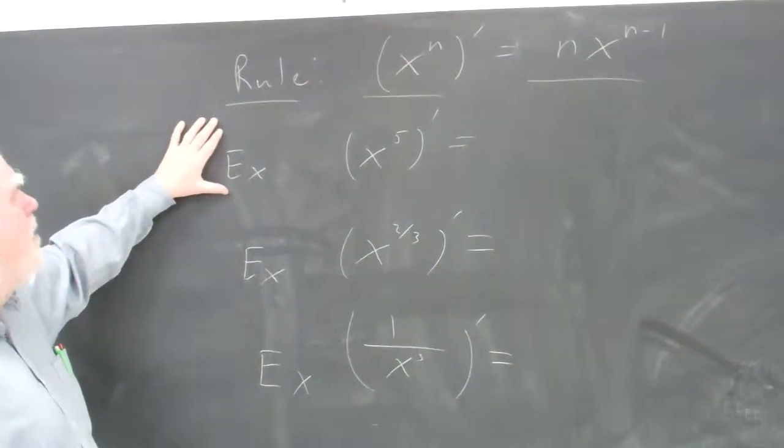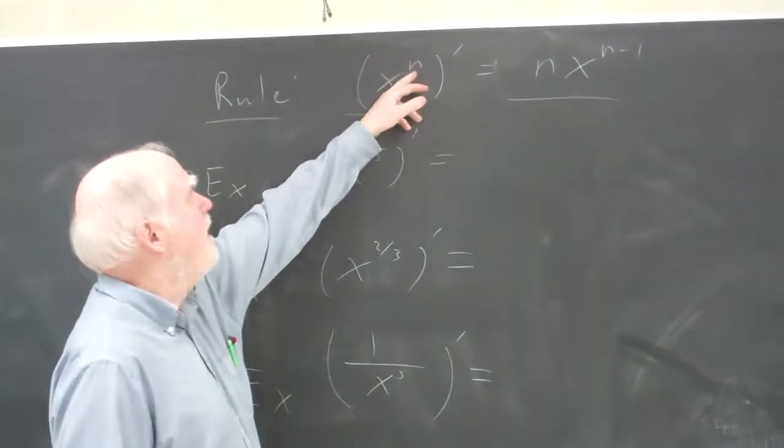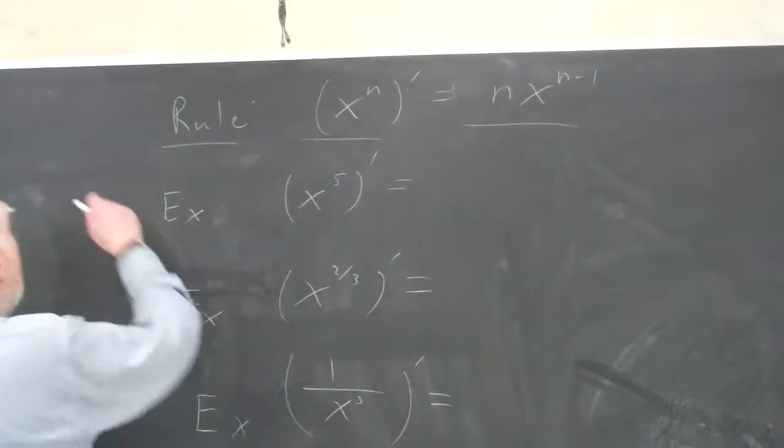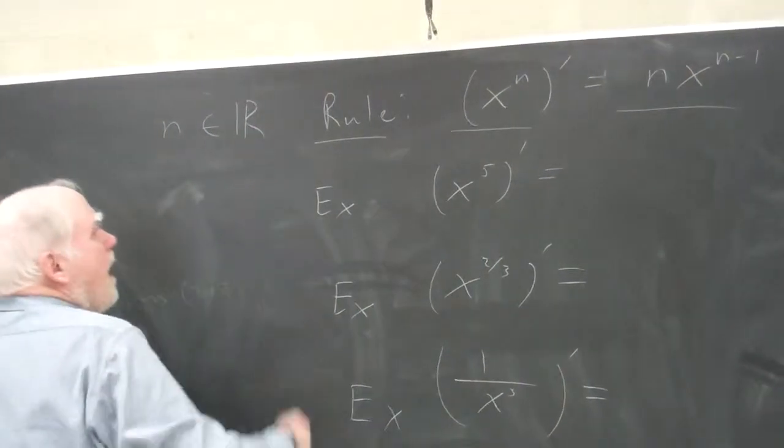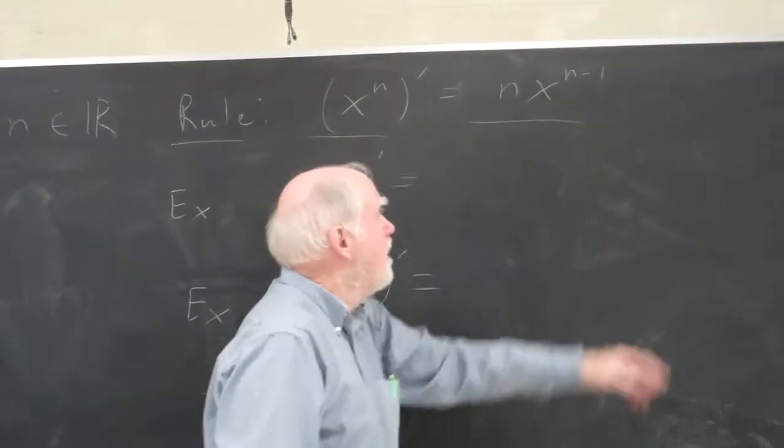I'm going to do a bunch of very easy derivatives. People have trouble with these, not so much because of the simple rule—x to the n, where n is any real number, equals n times x to the n minus 1.